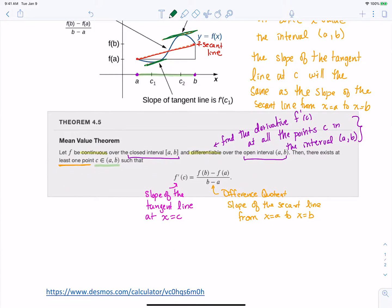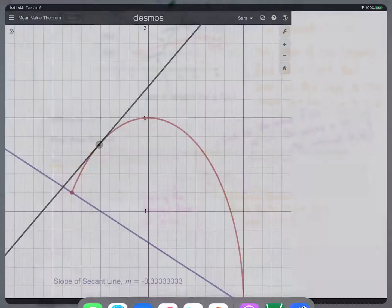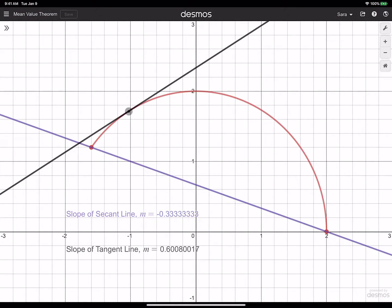And just for something fun, we've got a little Desmos demonstration of this. So here we've got our function in red. And we're looking at it from here, what's that point here, negative 1.6 until we get to 2.